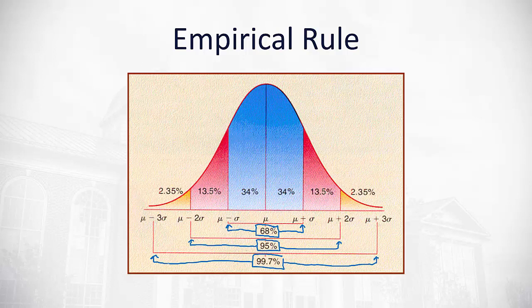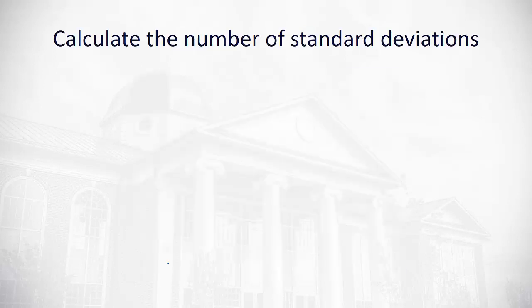These percentages also turn into probabilities. The area under the normal curve is the probability that you fall within a given range. So if we're going to apply this to some problems, we need to know how to calculate the number of standard deviations we are from the mean.